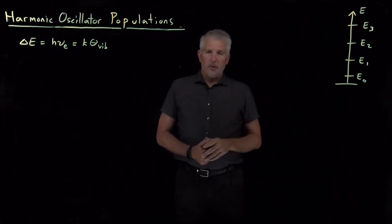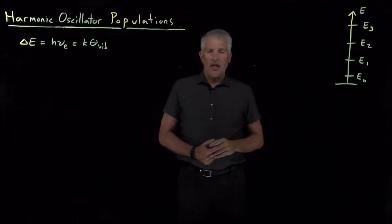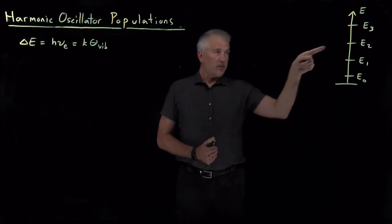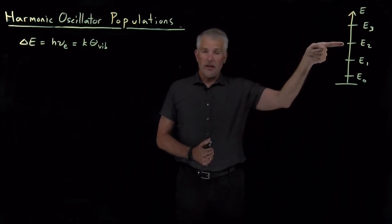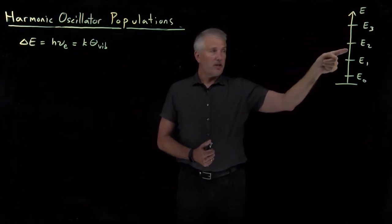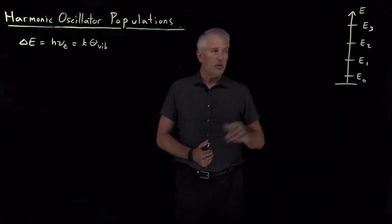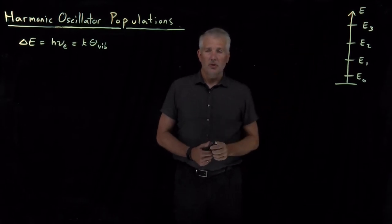But the one missing piece of the puzzle we have now is which of these states are occupied in the first place. Can I expect a molecule to be occupying the n equals two state and absorb energy to go into n equals three? Or does that state not have a particularly high population so I shouldn't expect that transition to occur?